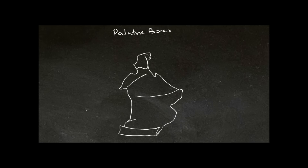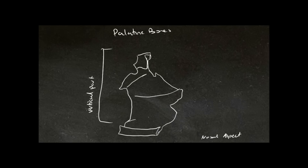Here we are looking at the nasal aspect, and first we need to orientate ourselves. The way we do that is by looking for certain features of the bone. Here we can see that there's both a vertical part to the bone and a horizontal part to the bone — we call this part the vertical part and this part here the horizontal part.